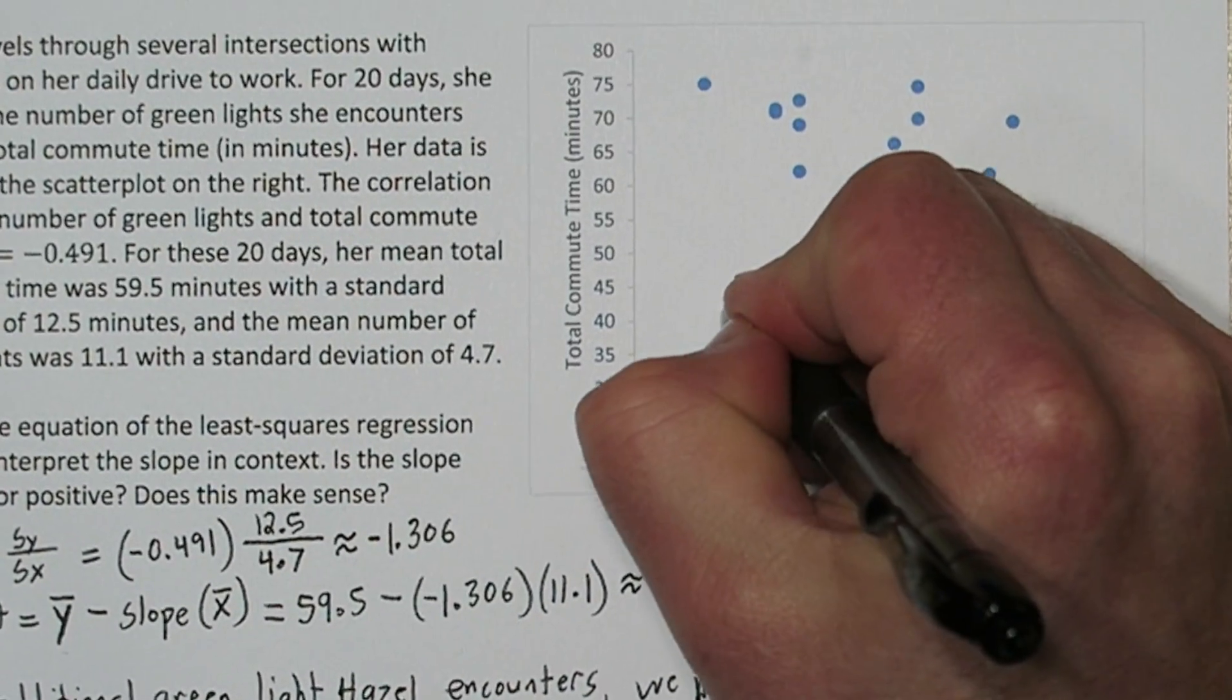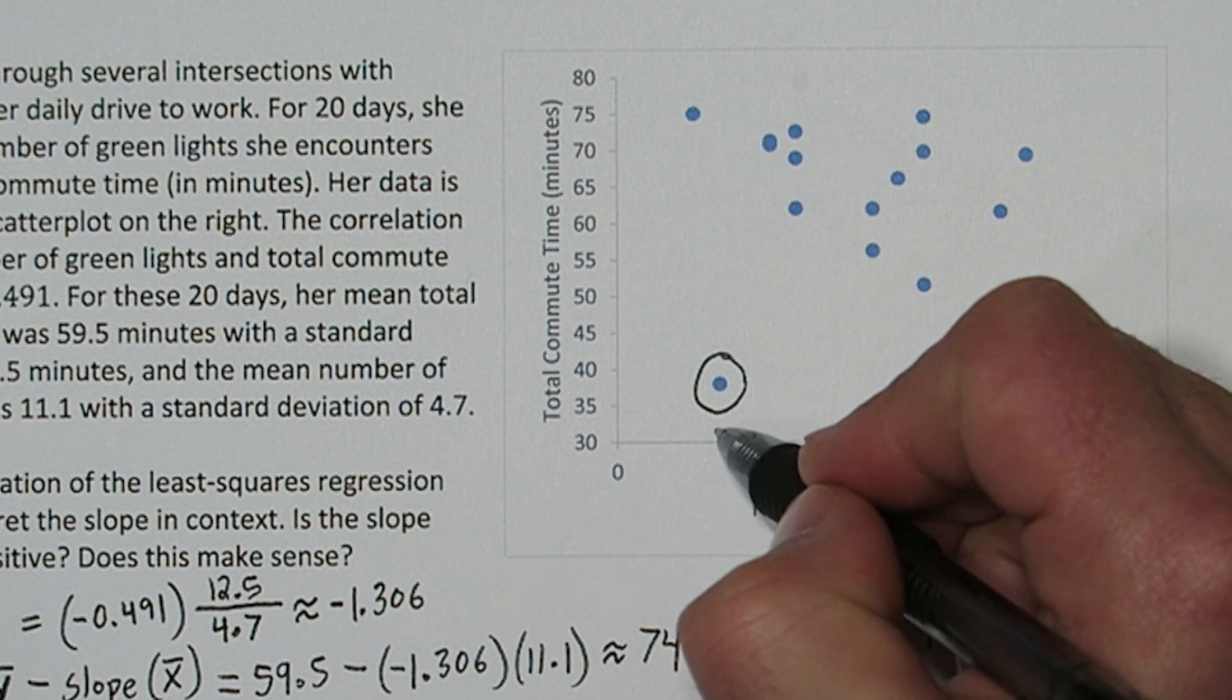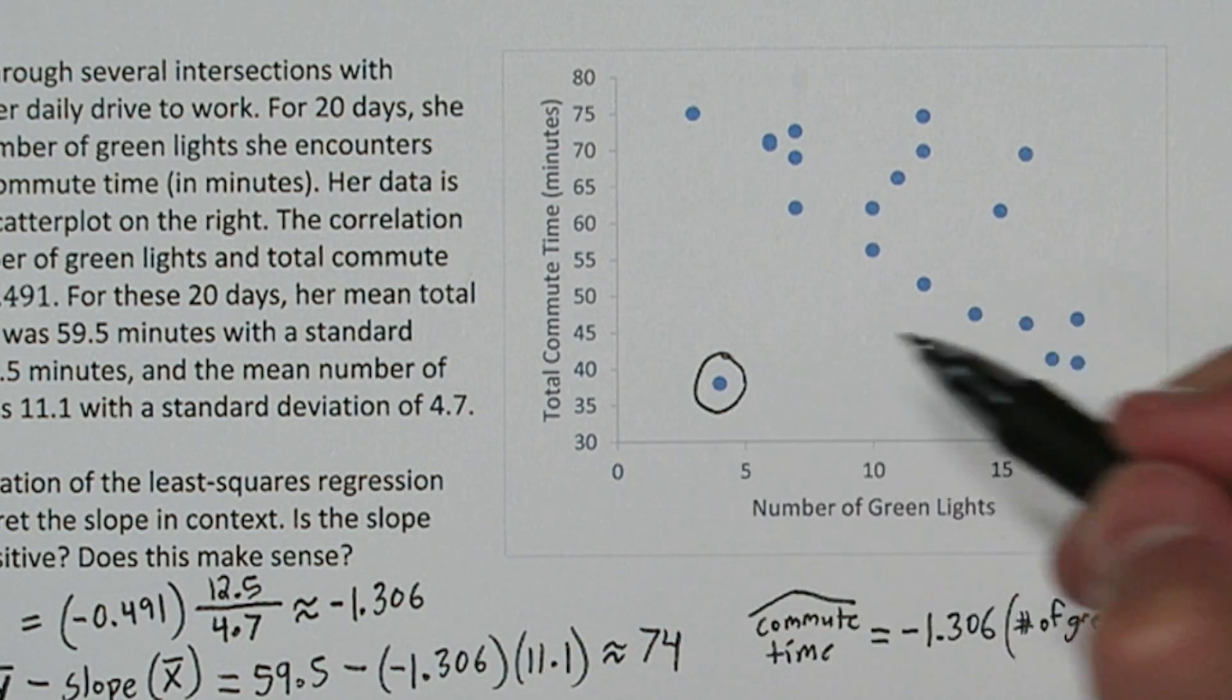Now this particular commute was very different from the overall pattern, and it looks like on this commute she encountered 4 green lights and had a commute time of about 38 minutes.